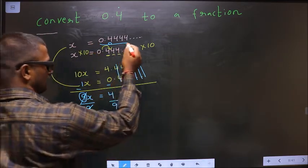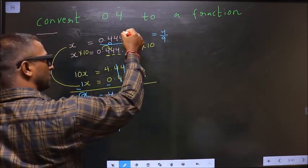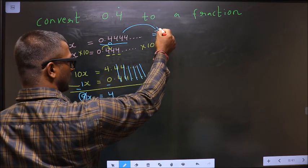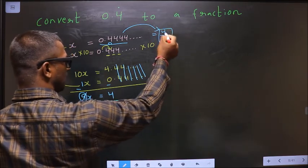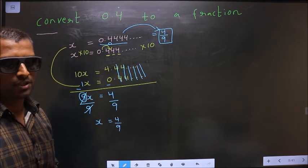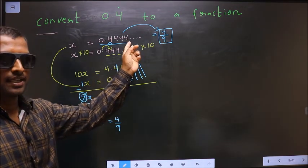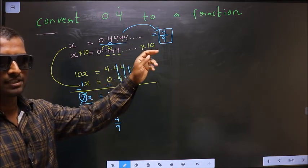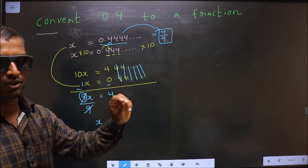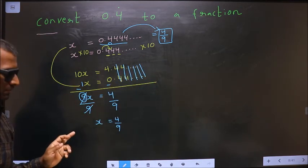This equals 4 by 9. Thus I have converted this recurring decimal to a fraction, and this is our answer. If you wish to confirm your answer, place this in the calculator. You should get this decimal. If you get this, then our fraction is correct. Am I clear with the method?